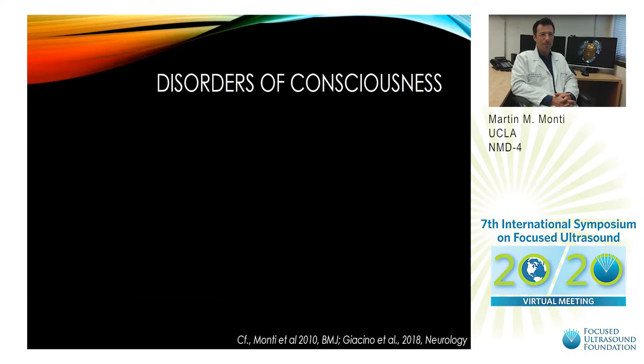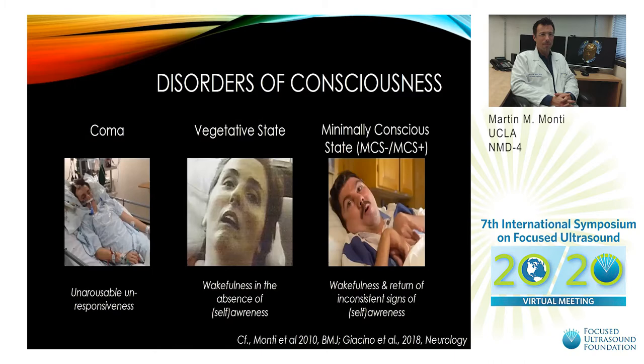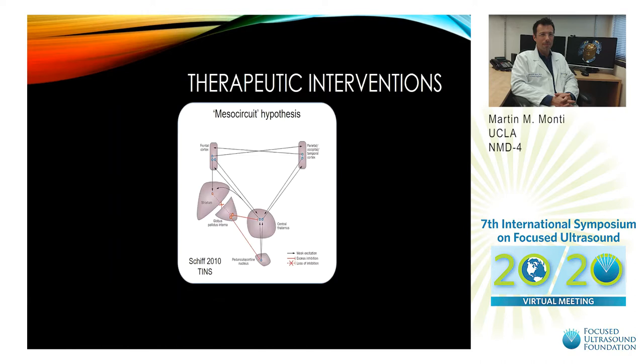Disorders of consciousness are a set of related conditions typically acquired after severe brain injury including coma, the vegetative state, and the minimally conscious state. Over 20 years of work have revealed that these conditions are best understood as a large-scale dysfunction within a corticostriato-pallidothalamocortical large-scale mesocircuit, with the thalamus particularly being a key node in the dysfunction.